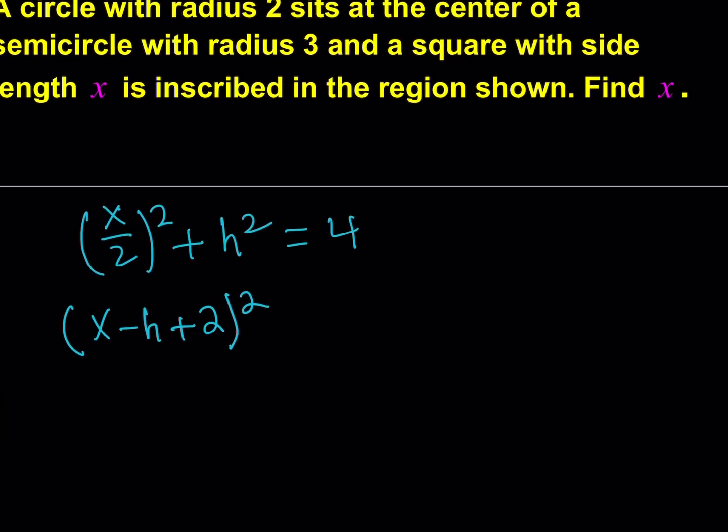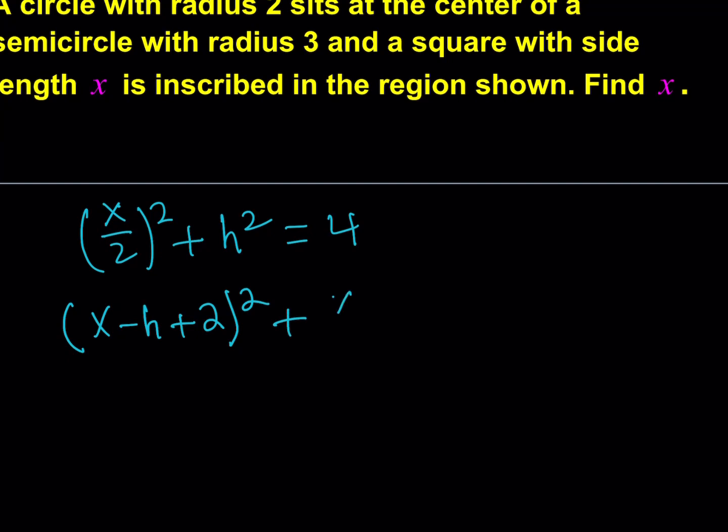So the height is going to be half of x, and my hypotenuse is going to be 3. Therefore, 3 squared is 9. Okay, so this is my system of equations, and I need to solve this.